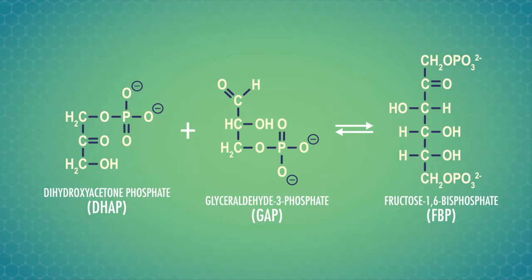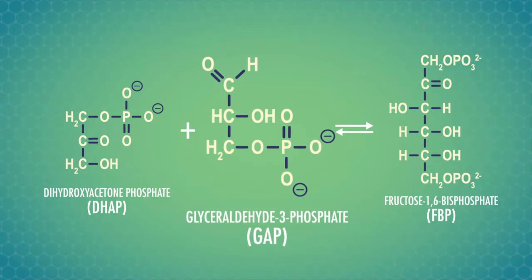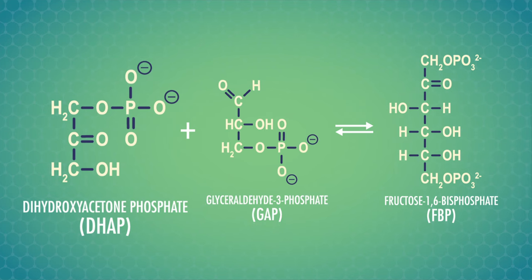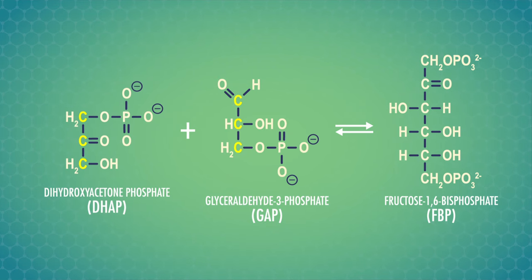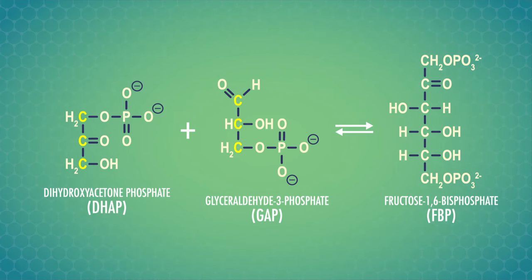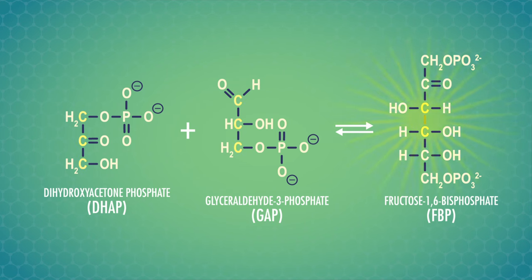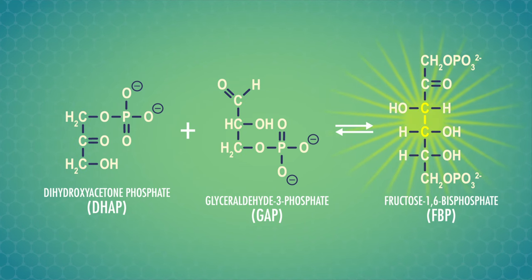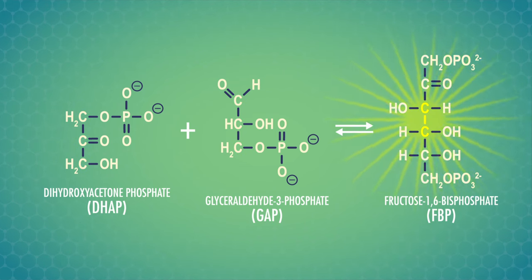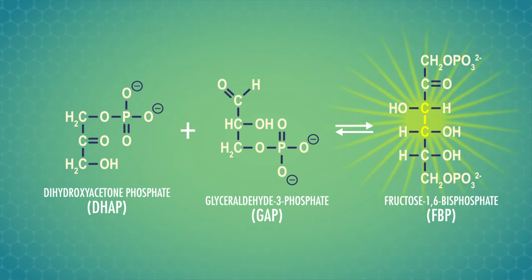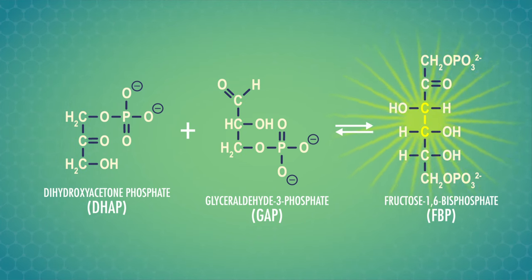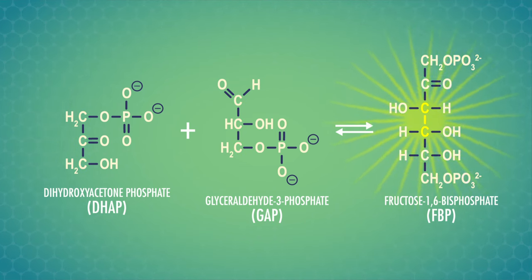In this aldol reaction, an aldehyde and a ketone, with three carbons each, join to make a six-carbon sugar molecule. So they're forming tasty carbon-carbon bonds. And we'll be exploring more of these kinds of reactions in this episode.